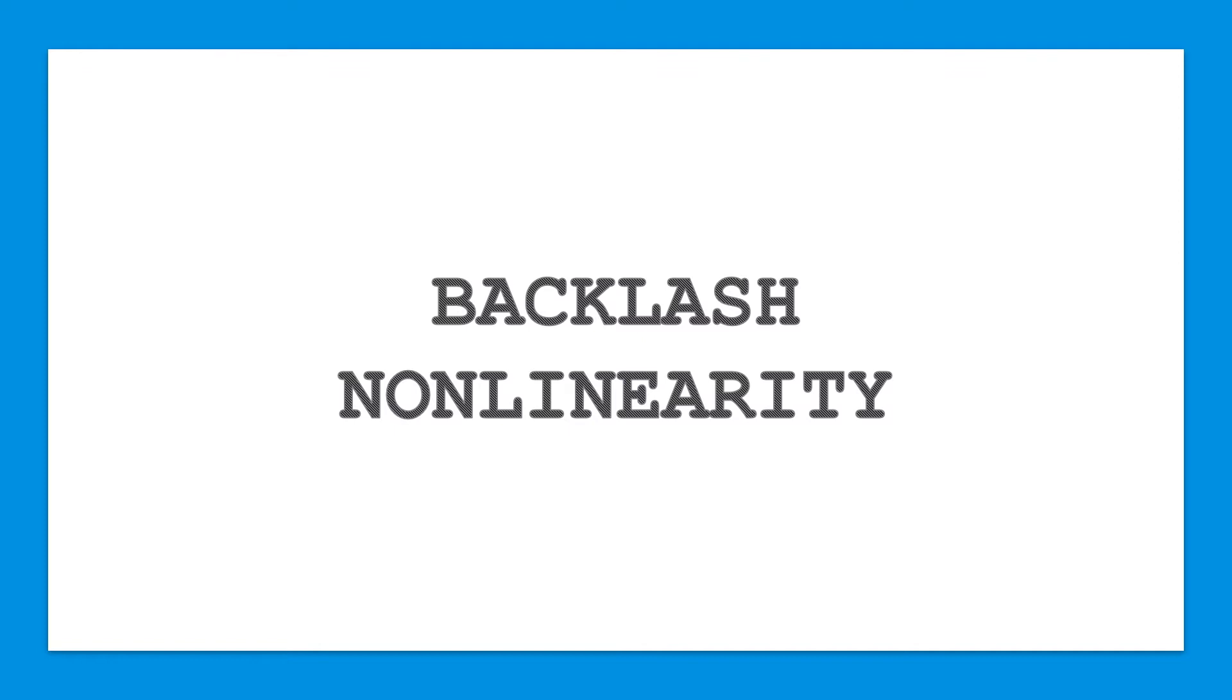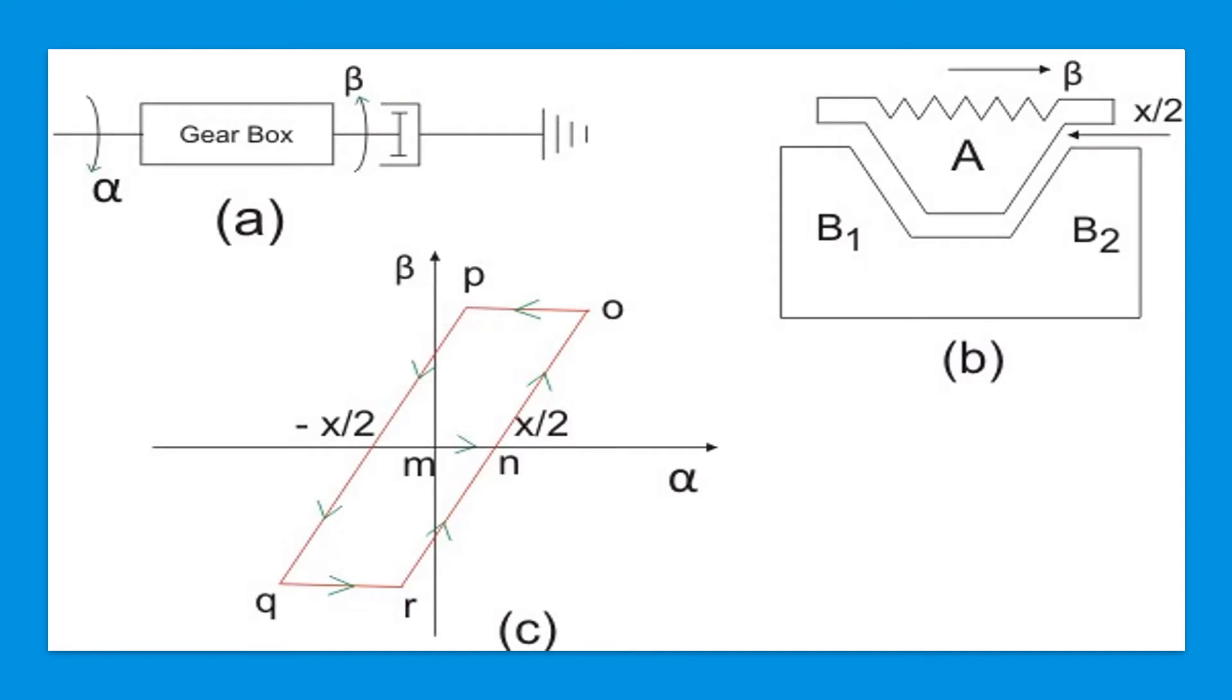Backlash in fact is the play between the teeth of the drive gear and those of the driven gear. If we consider a gearbox shown in Figure A having backlash as illustrated in Figure B. Figure B shows the teeth A of the driven gear located midway between B1 and B2 of the driven gear. Figure C gives the relationship between input and output motions.